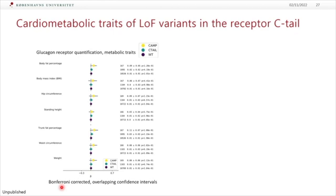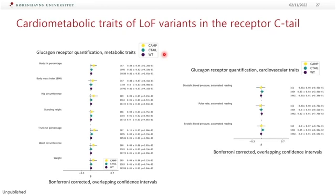Going back to the C-terminal tail variants, there wasn't a big change in affinity — except for one — but there were some changes in cyclic AMP. Comparing everything in the UK Biobank, the cardiometabolic variants I presented before come out as being relevant for different metabolic traits, whereas the C-terminal tail variants show no differences — those are the green ones in the middle, with the black ones as wild-type background. We do see a slight potential increase in systolic blood pressure for the variants with affected C-terminal tails.